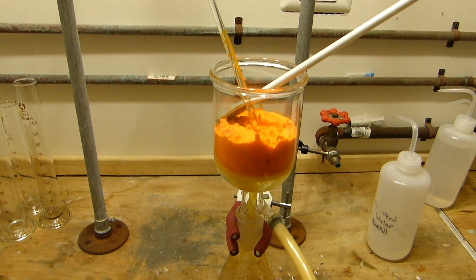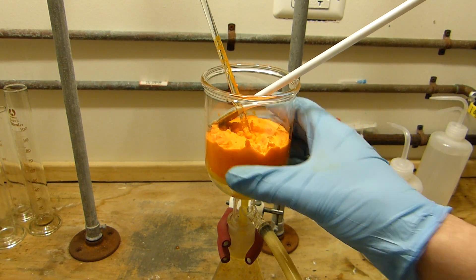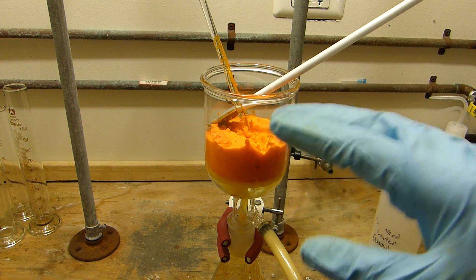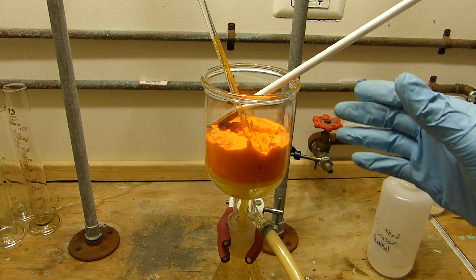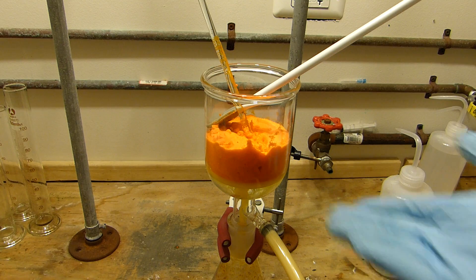All right I'm going to leave this on the vacuum for about 10 minutes just to get as much water as I can out of it. Normally you'd wash a filtrate with cold deionized water or something like that. But you'll notice that in this preparation most of the contaminants in the solution anyway are volatile. You have hydrochloric acid, water, and pyridine.